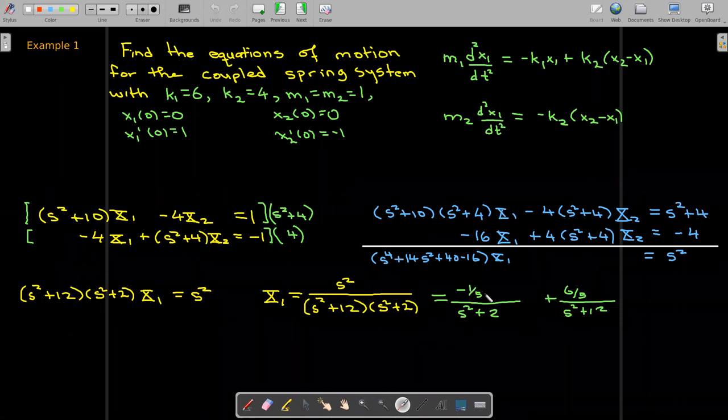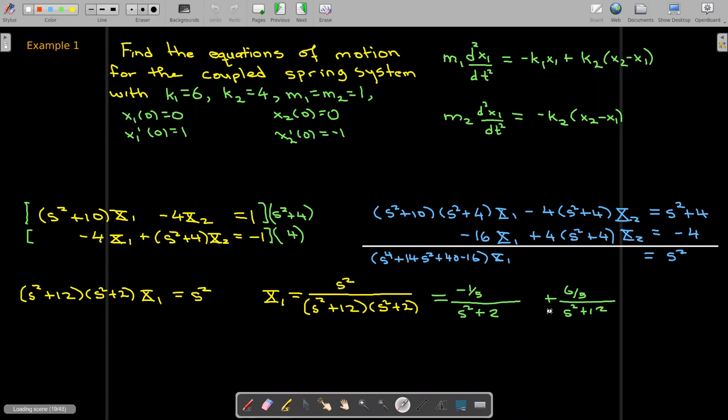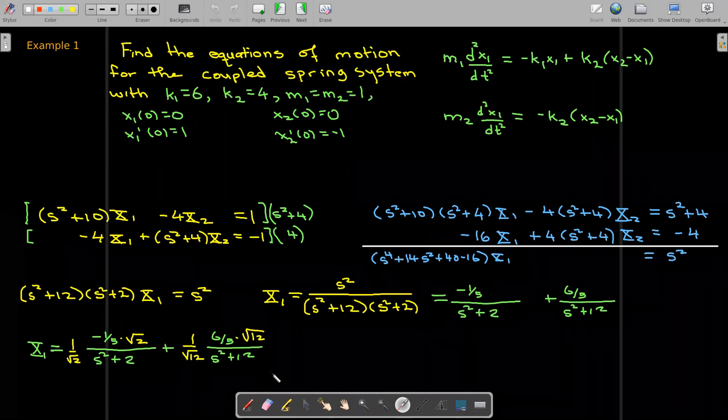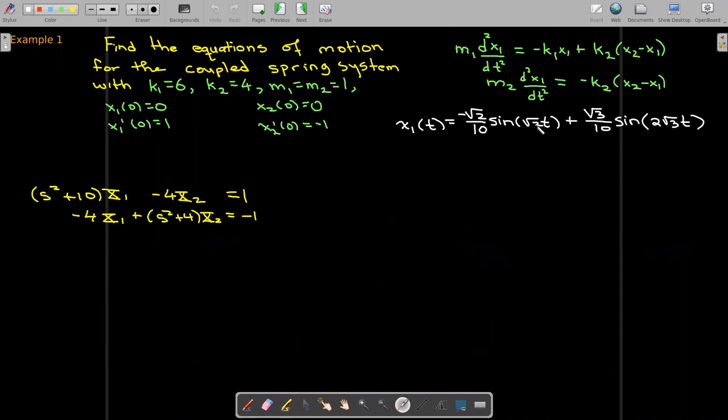And of course that's something that you would like because this looks very much like the Laplace transform of a sine function and the other one as well. So we're just off by a constant. Let's go ahead and fix that constant. My k value in the first term is radical 2. Radical 2 squared gives me 2, so I'm multiplying essentially top and bottom by radical 2. Same idea in this second function. So that gives me x1 of t as the sum of two sine functions which can be cleaned up. And I can write that as negative radical 2 over 10 sine of radical 2t plus radical 3 over 10 sine of 2 radical 3t.